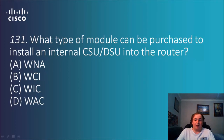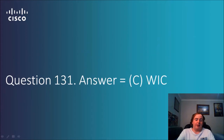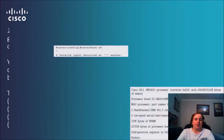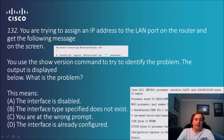Question 131: What type of module can be purchased to install an internal CSU/DSU into the router? This is just another rote-learning memorization question. The answer is C — a WAN interface card. That's just one of those cards you can put into your router to get extra WAN functionality.